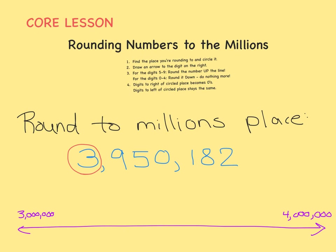Look next door for what to do — let's draw an arrow over to the 9. For the digits 5 through 9, round the number up the line. So because we see a 9, we are going to round the 3 up to a 4. Everything to the right becomes zeros.